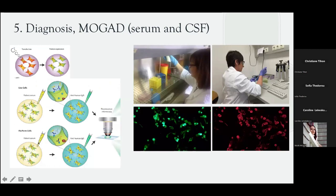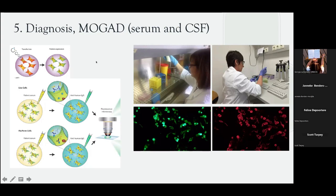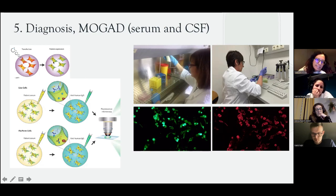For MOGAD, we find MOG antibodies. Unlike NMOSD, where we usually analyze serum only because antibodies are produced in the periphery, for MOGAD it is valuable to analyze antibodies in both serum and CSF. The technique involves immortalized kidney cells transfected with the MOG or aquaporin-4 peptide — we apply the patient's serum or CSF, use a fluorescence antibody, and examine under microscope. The process takes about three days to determine whether the patient has these antibodies.